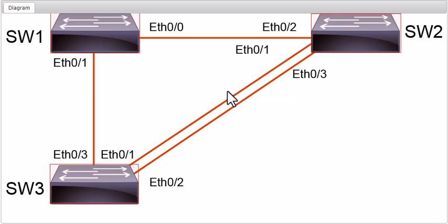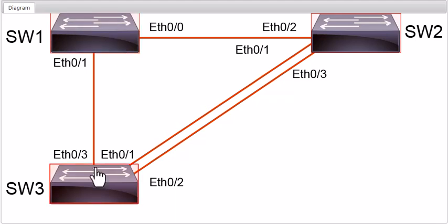Hello everyone. In this Cisco demo lab, I'm going to explain the root bridge selection, what is the root port, what is the designated port, what is the alternate port, and how switches decide which switch becomes the root bridge, which link becomes the root port, which links become designated ports, and which links need to be blocked — becoming an alternate port.